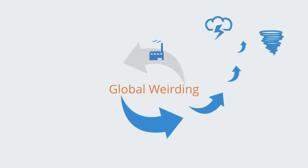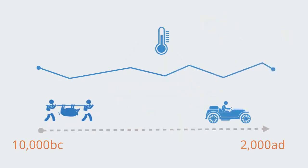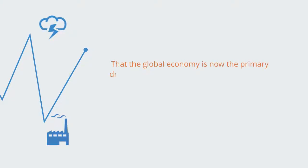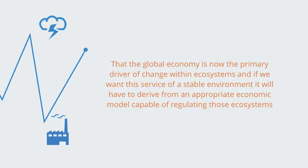We have benefited for over 10,000 years, since the beginning of the Holocene, from Earth regulating itself to create an environment conducive for human economic activity. The Anthropocene is a recognition that this stable geological era has ended — that because of human intervention, the biosphere can no longer stabilize itself within the same equilibrium that has benefited societies in the past, and that the global economy is now the primary driver of change within ecosystems. If we want the service of a stable environment, it will have to derive from an appropriate economic model capable of regulating those ecosystems.